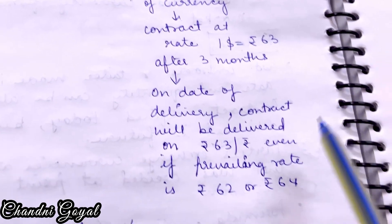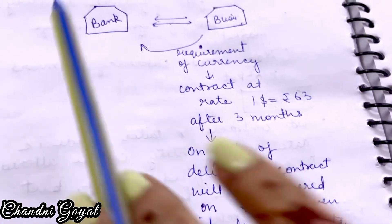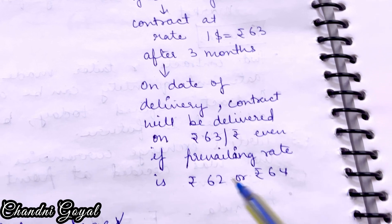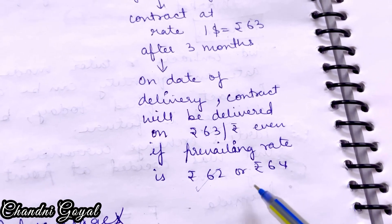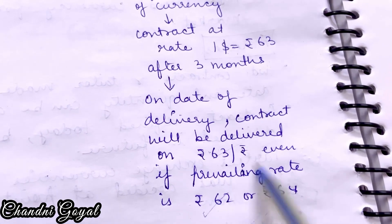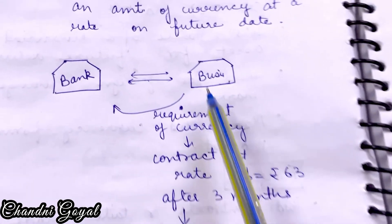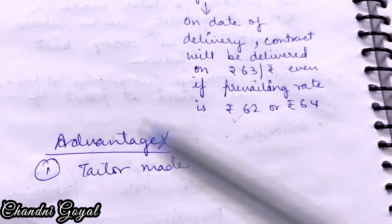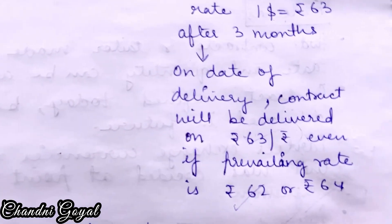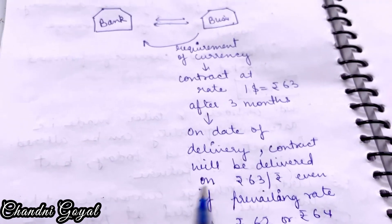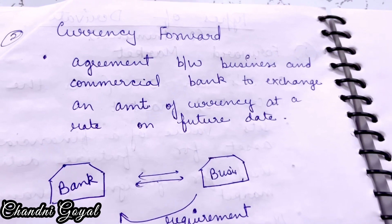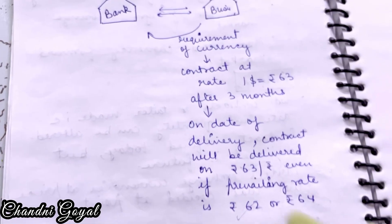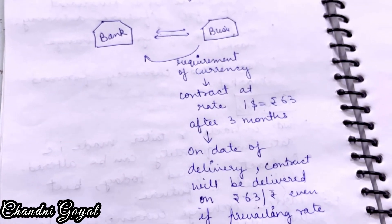At the date of delivery, the rate used will be the one agreed upon in the contract — one dollar equals 63 rupees. It doesn't matter if 3 months later one dollar is worth 63 or 64 rupees — the exchange will still happen at the contracted rate. One advantage is that it is tailor-made.